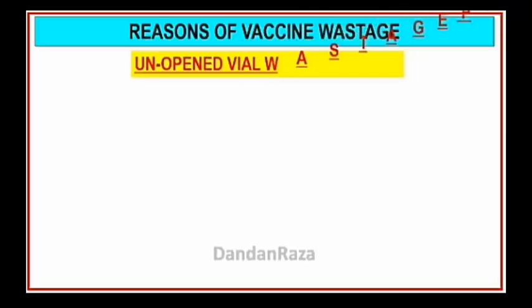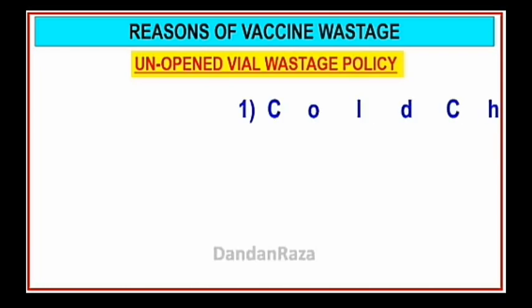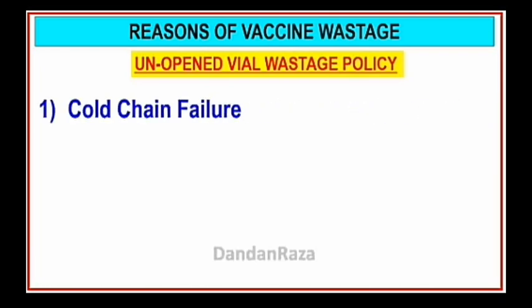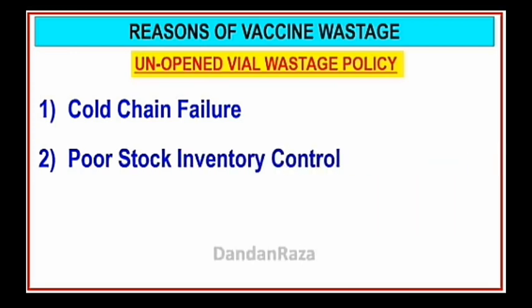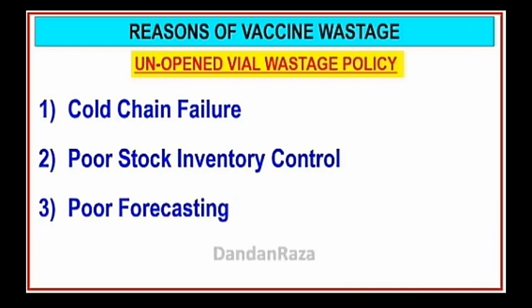Reasons of vaccine wastage — unopened vial policy. Number one: cold chain failure. Number two: poor stock inventory control. Number three: poor forecasting.